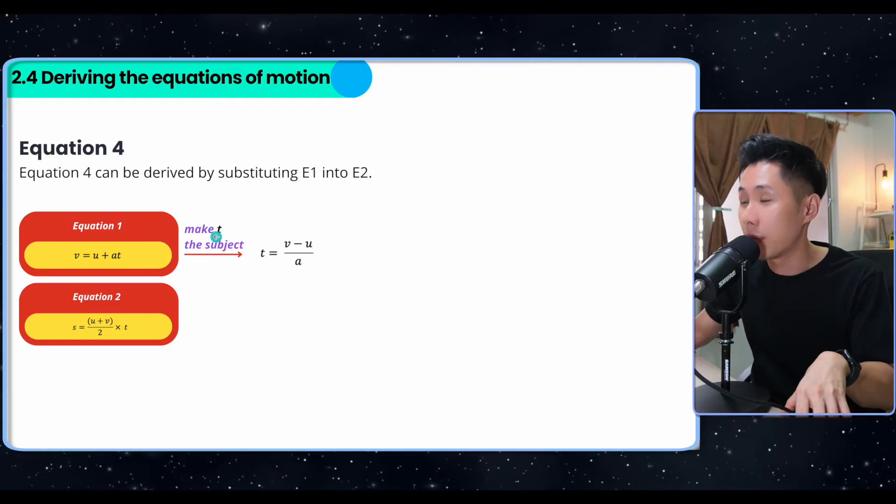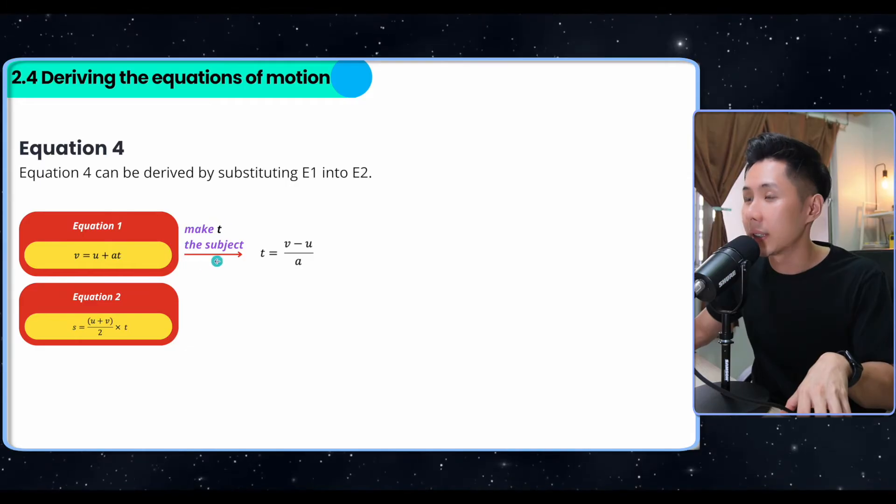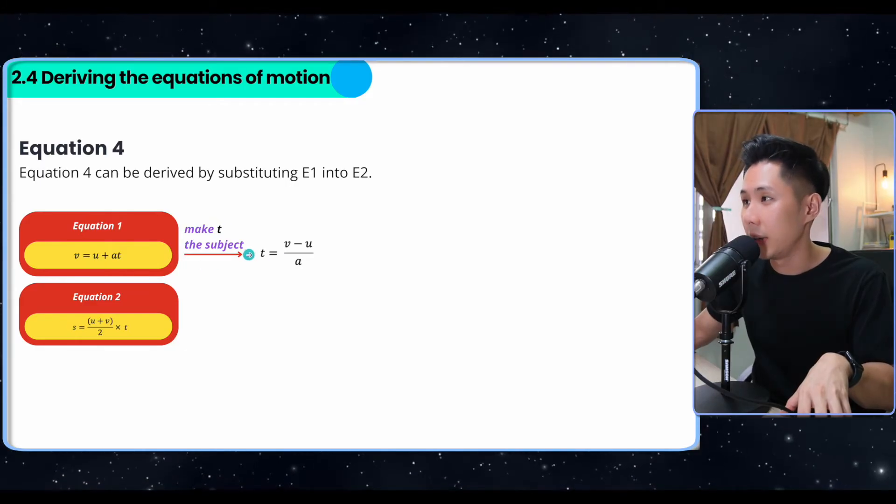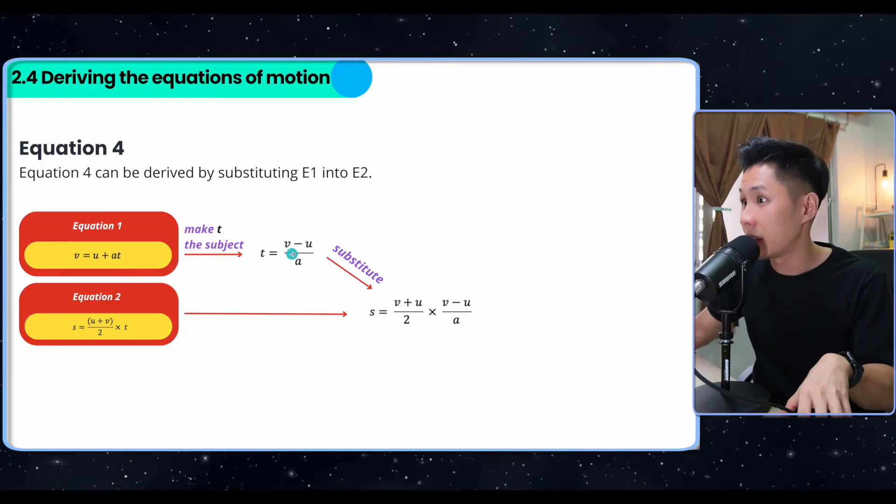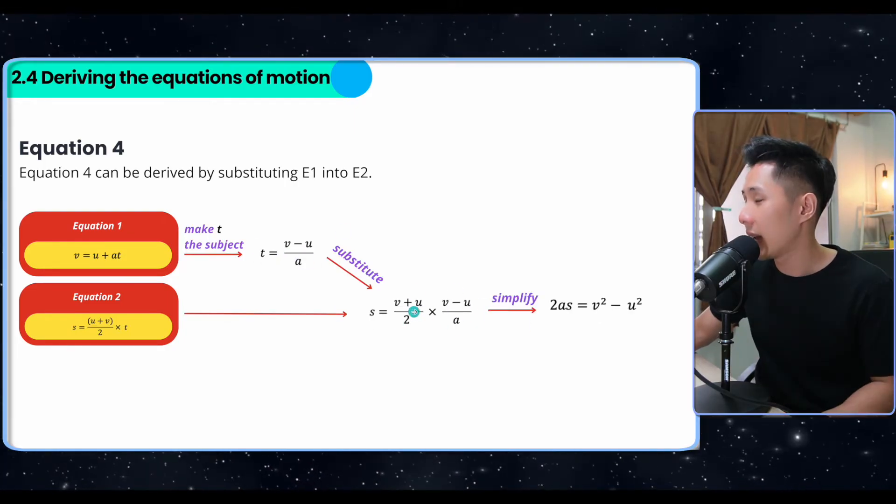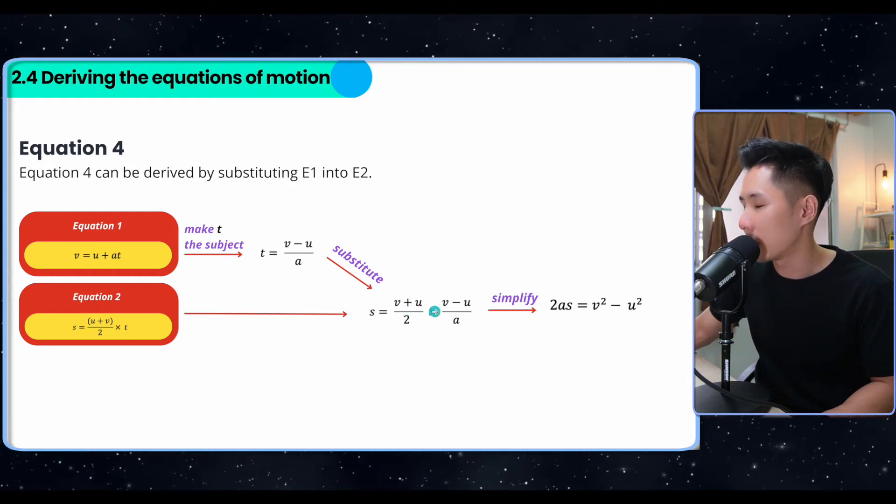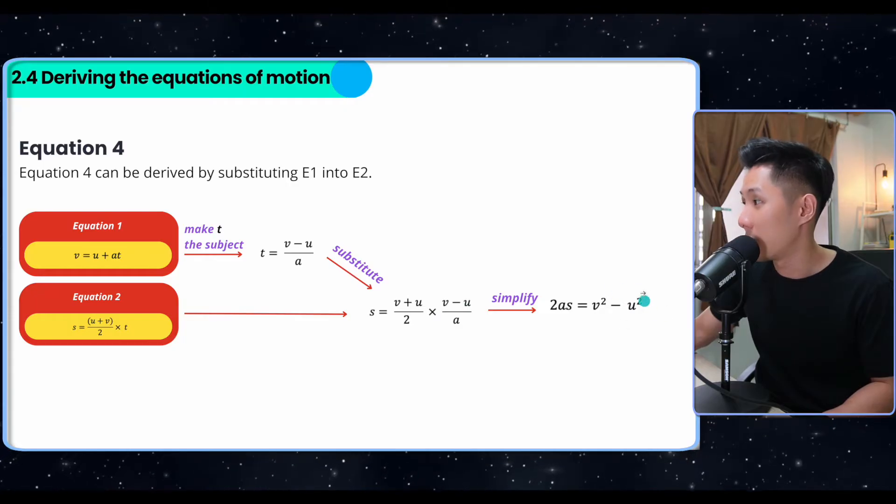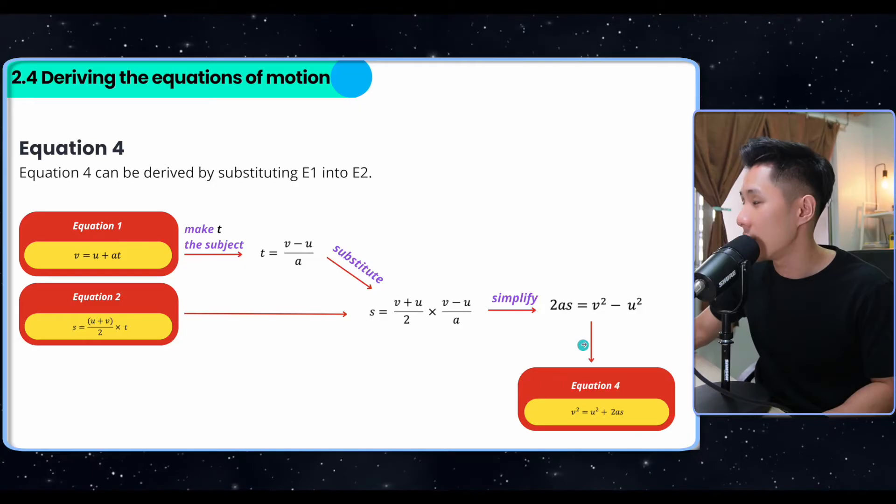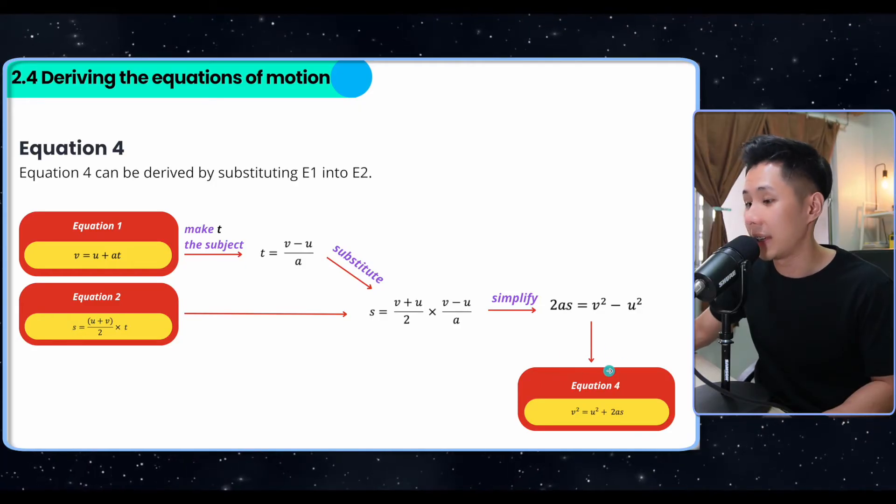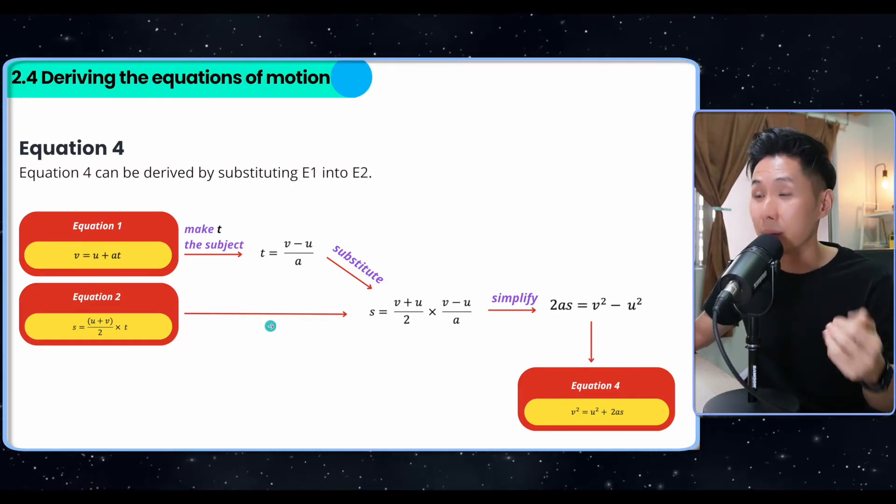Next, we have equation four can also be gotten using equation one and two. So first we make t the subject in equation one, meaning I move t to be the subject. And then I substitute the value of t into my formula here. And then we can do some simplification. We'll know that v plus u multiply by v minus u. This is what you'll get what we learn in math. And we'll move 2a to the other side and rearrange the order. And you should get equation four already. So that's how you can derive all four formulas using basic quantities.